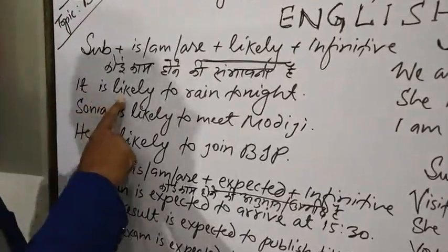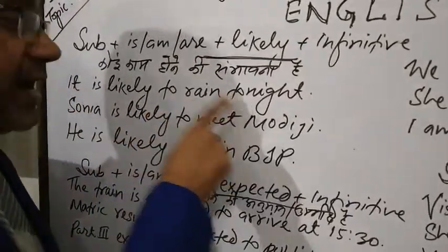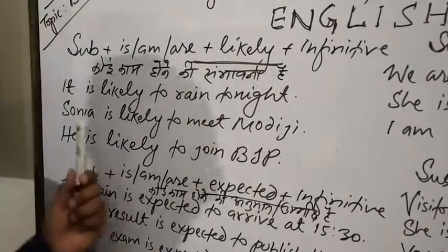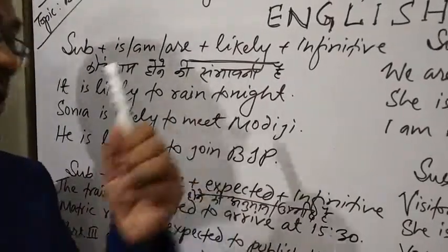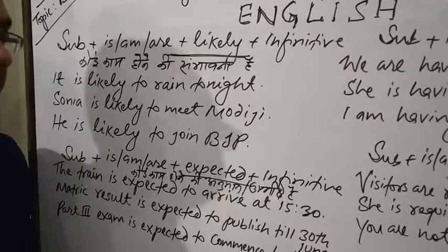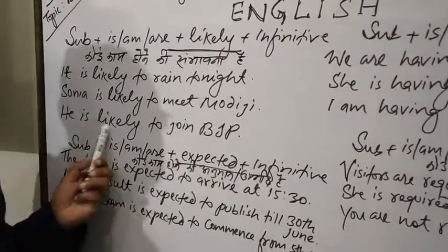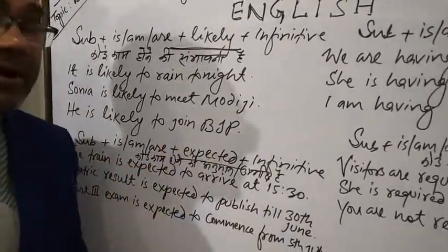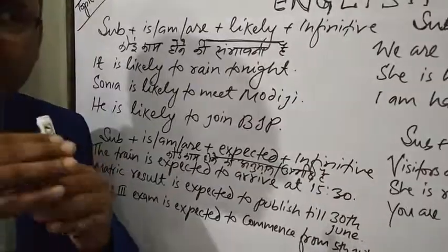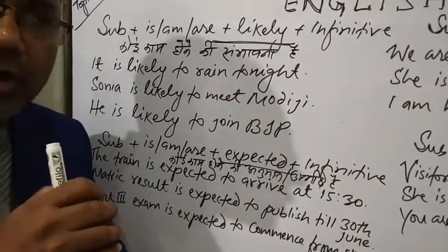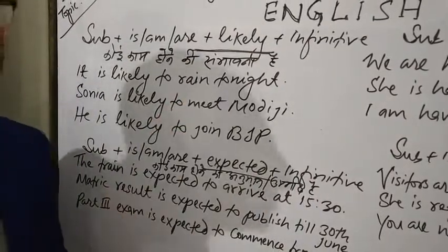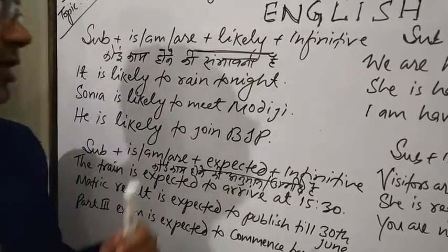Example: 'It is likely to rain tonight.' Another example: 'Sonia is likely to meet Modiji.' And: 'Sonia is likely to join BJP' — meaning there is a possibility she may join that party. We use 'likely' when there is a probability or possibility of something happening.